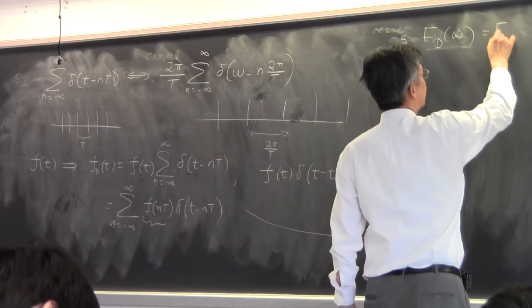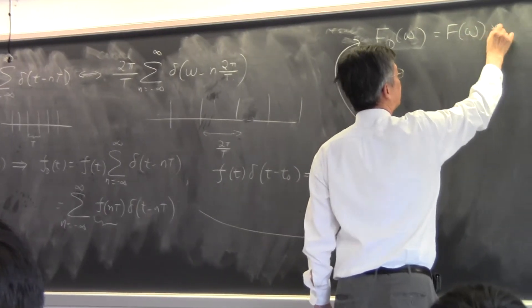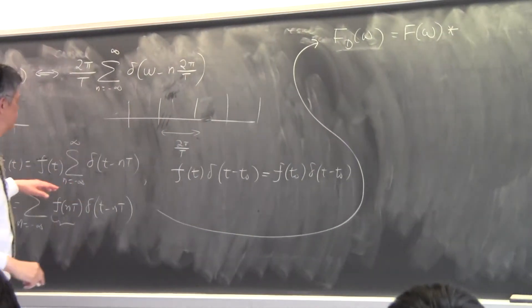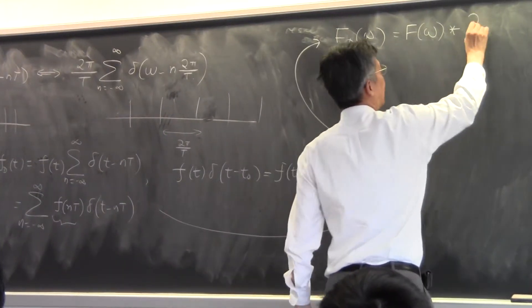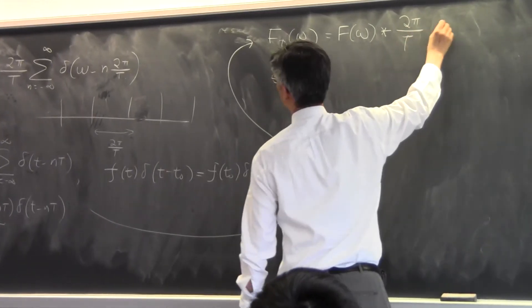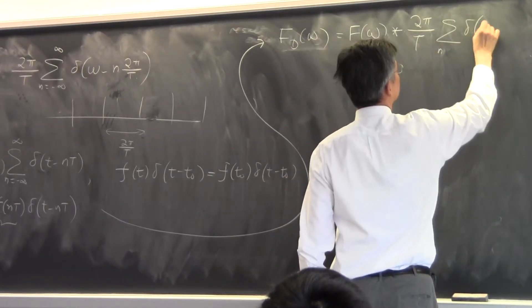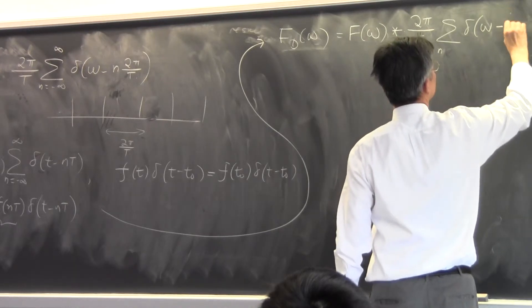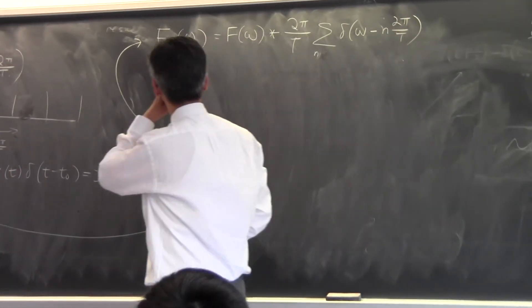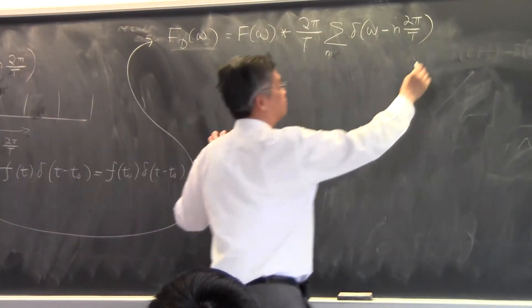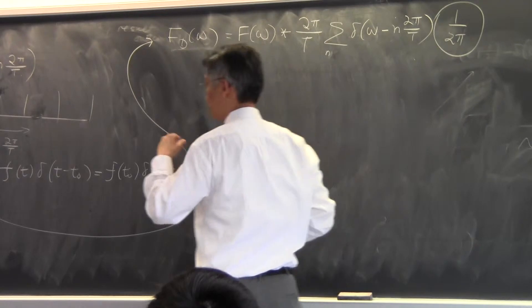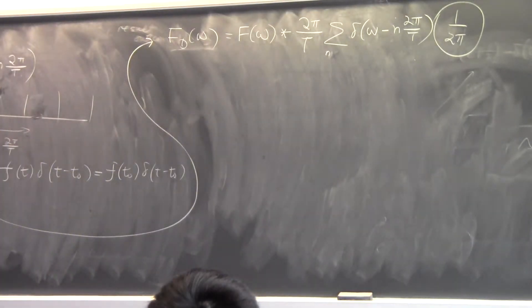So, it will be F of omega convolving with this thing over here, 2pi over T, the impulse train, and 2pi over capital T. But I am always using this factor of 2pi. So, I have to put in the factor of 2pi there. This follows from the symmetry property of Fourier transform. You put in the 2pi.